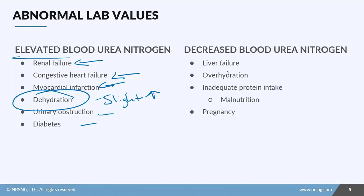You're going to see decreased BUN values in patients with liver failure — if they're not properly converting ammonia to urea, you won't have as much urea production. Overhydration is also going to keep BUN down. Additionally, patients who are malnourished or not getting enough protein in their diet will have low BUN levels, and pregnancy is also a cause for decreased BUN values.